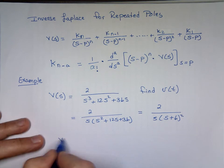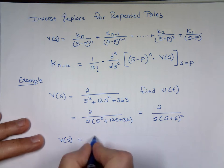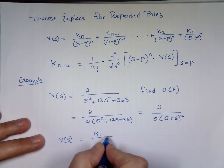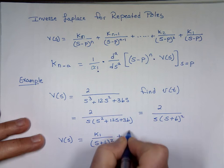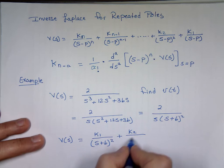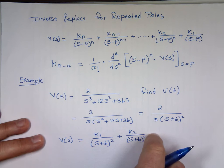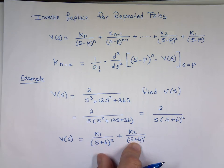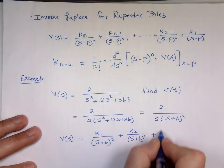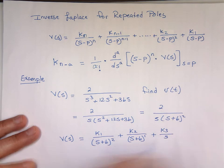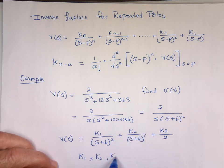So when you rewrite this using partial fractions, this is going to be k_1 over (s plus 6) squared, plus k_2 over — each time subtract 1 from that power — (s plus 6) to the 1. Then you'd have k_3 over (s plus 6) to the 0, which is 1, so you don't include that term. We also have the s here, so that's k_3 over s.